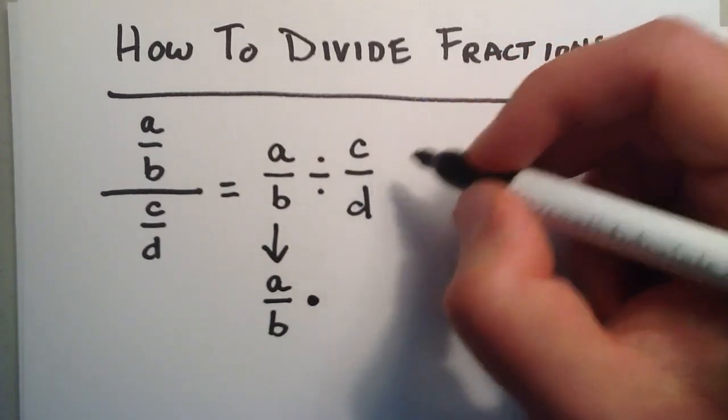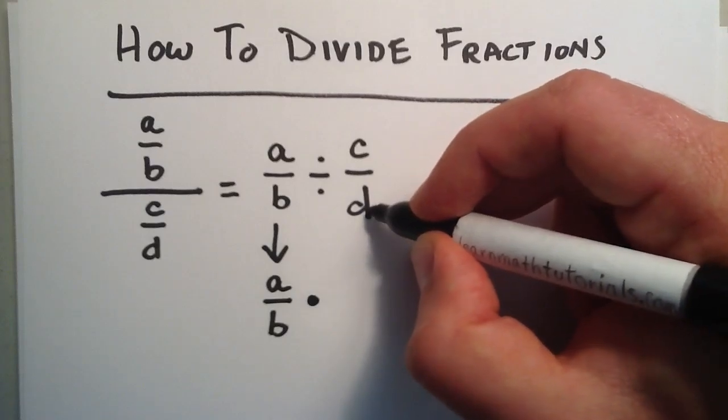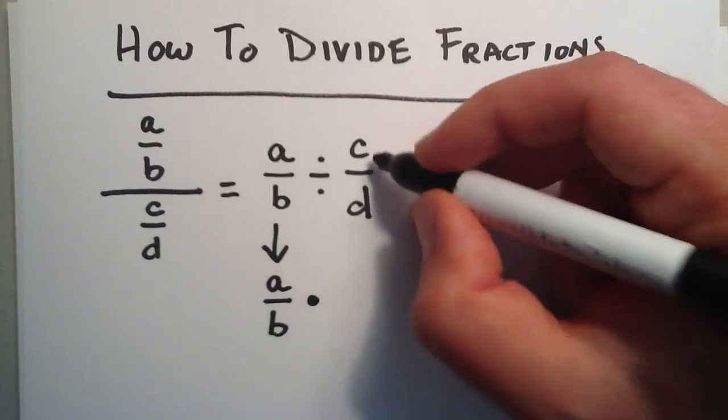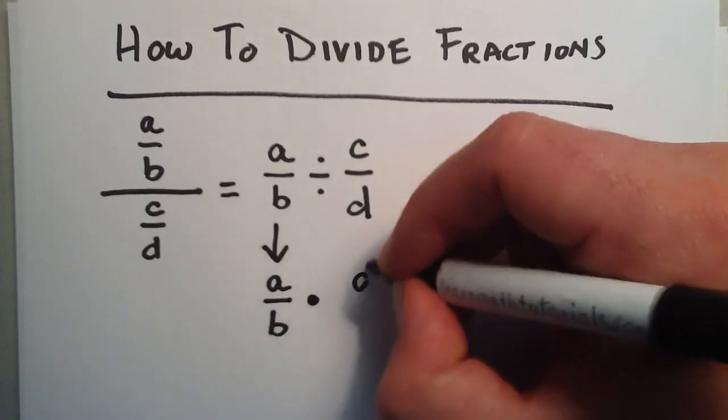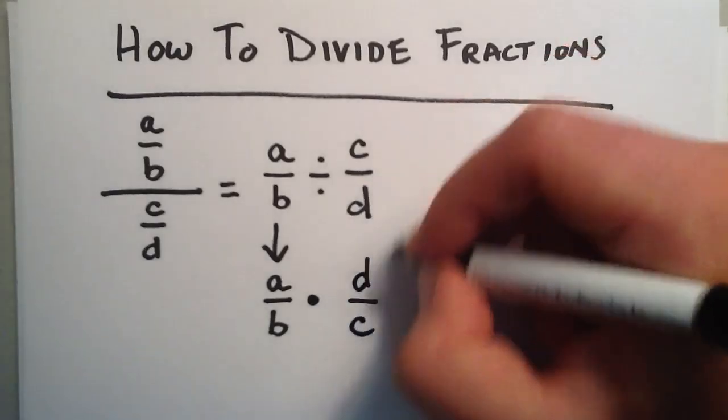And by invert, I mean the numerator gets placed where the denominator is, and the denominator gets placed where the numerator is. So c over d becomes d over c. We just flip it.